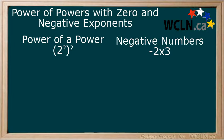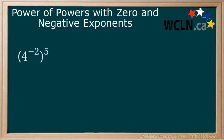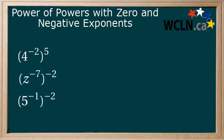You are not learning anything new here. Instead, we are combining powers of powers and negative numbers. We will look at three examples: 4 to the power of negative 2, to the power of 5; z to the power of negative 7, to the power of negative 2; and 5 to the power of negative 1, to the power of negative 2. Now take a moment and try solving these based on what you know about powers of powers and negative exponents. Leave your answer in exponent form. Press pause, and then when you are ready press play to continue.